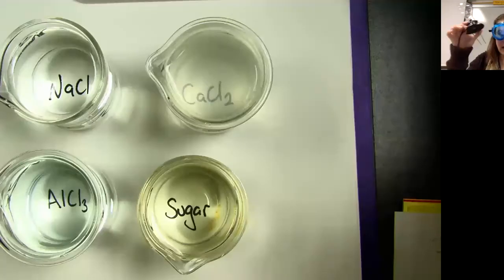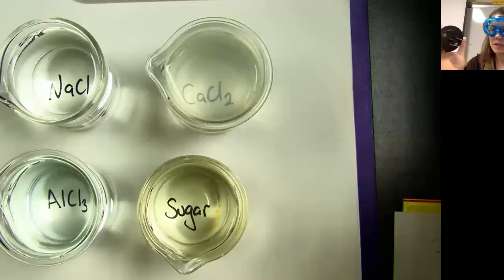So I have here a light bulb. I'm going to plug this light bulb in. It's got two probes on the bottom. If I put into something that conducts electricity, the light bulb will light up. If it doesn't conduct electricity, the light bulb won't light up.